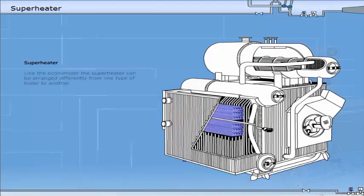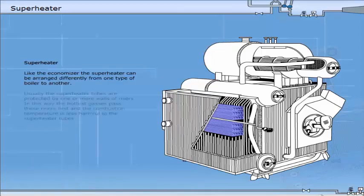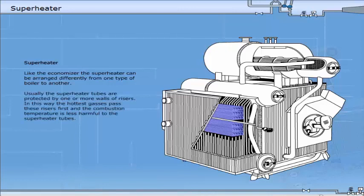Like the economiser, the superheater can be arranged differently from one type of boiler to another. Usually the superheater tubes are protected by one or more walls of risers. In this way the hottest gases pass these risers first and the combustion temperature is less harmful to the superheater tubes. The steam outlet temperature from the superheater can be well above 500 degrees centigrade.